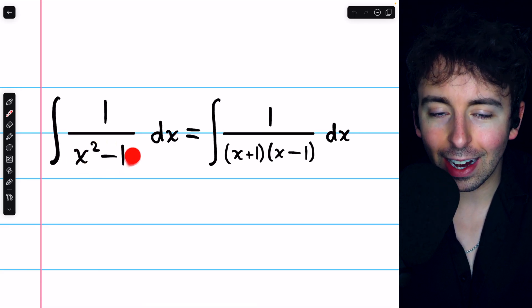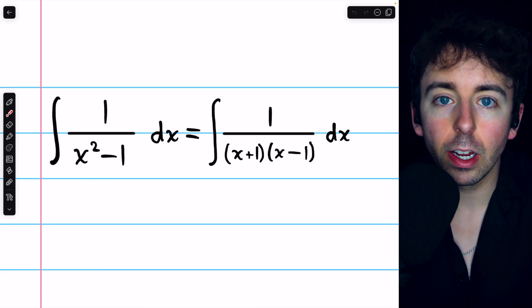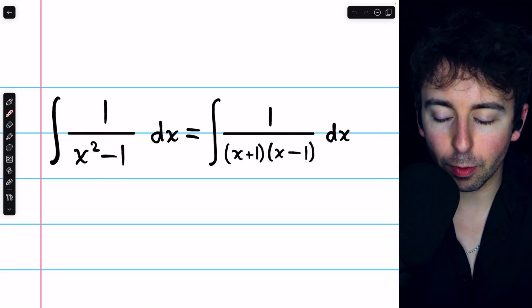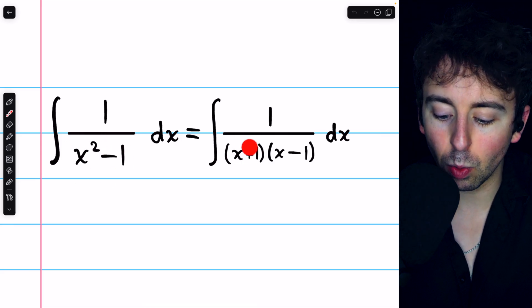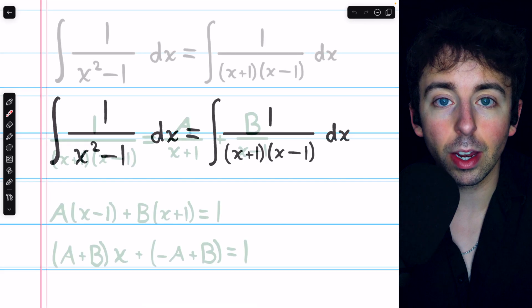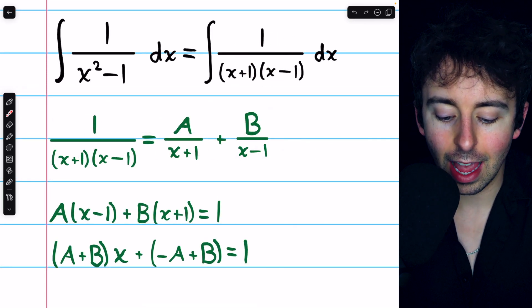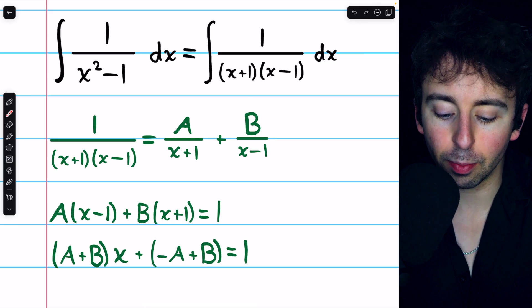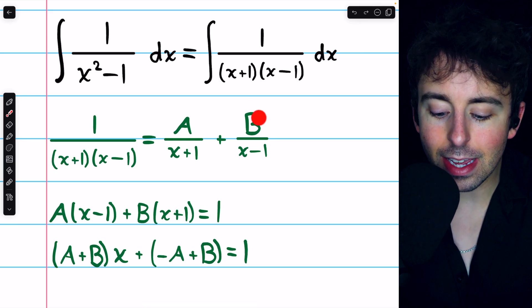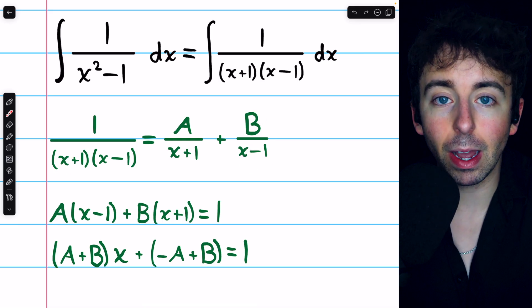We have to begin by factoring the denominator. We rewrite this difference of squares as x plus 1 times x minus 1. Now, we'll try to decompose this fraction as A over the factor x plus 1 plus B over the factor x minus 1.